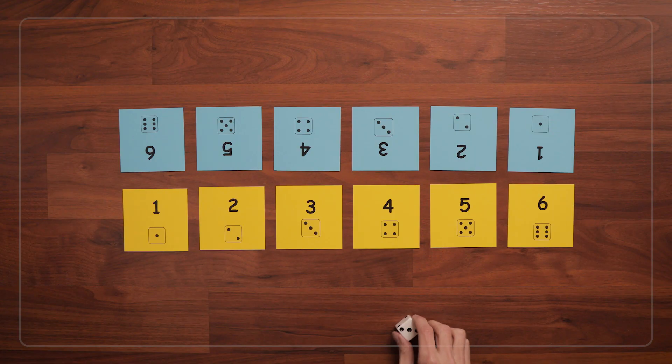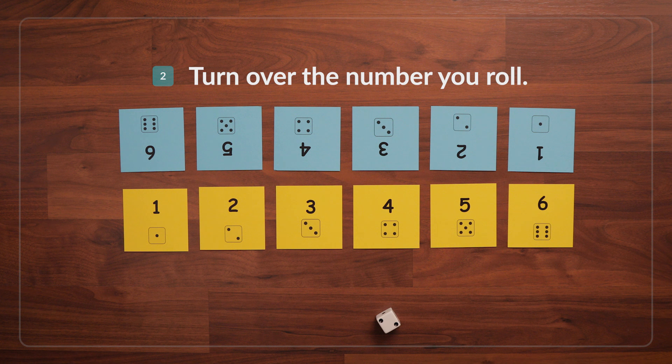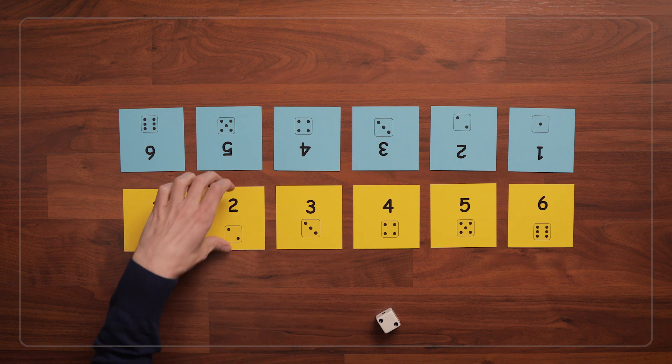Once the cards are all set up, roll the die and turn over the card that matches the number you rolled. So I rolled a 2, and I turn over my 2 card.